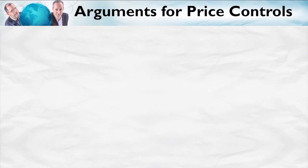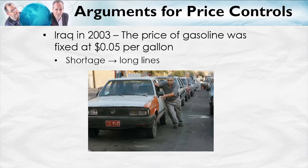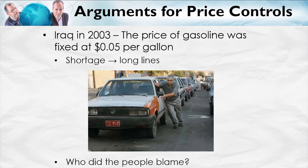Here's another example of a price control on oil. In 2003, Iraq fixed the price of gasoline in the country at 5 cents per gallon. Great, cheap gasoline, right? Well, no — of course there were shortages and long lines, just as in the United States during the 1970s. Indeed, this picture looks like it might be from the United States in the 1970s, except it is actually a picture from Iraq. Now, whom did the Iraqis blame? Did they blame the price control? No. Just like the Americans in the 1970s, they blamed foreigners — except this time they blamed the Americans, saying the Americans are shipping all of the oil out. Of course, the real cause of the shortage was the price control at 5 cents per gallon.